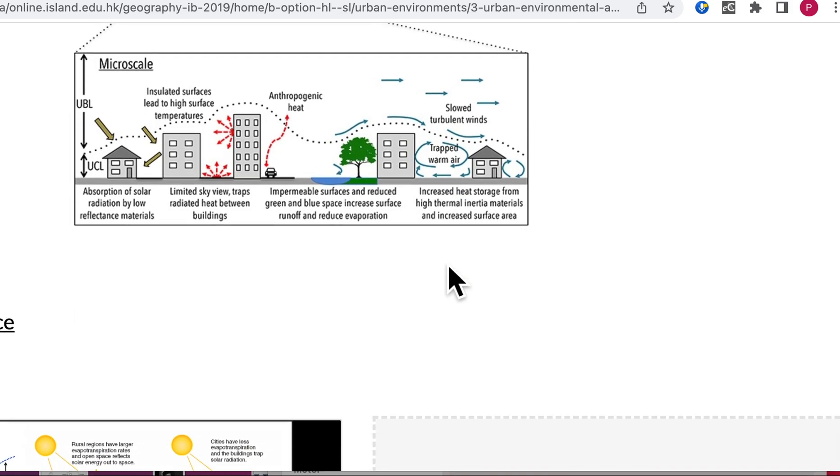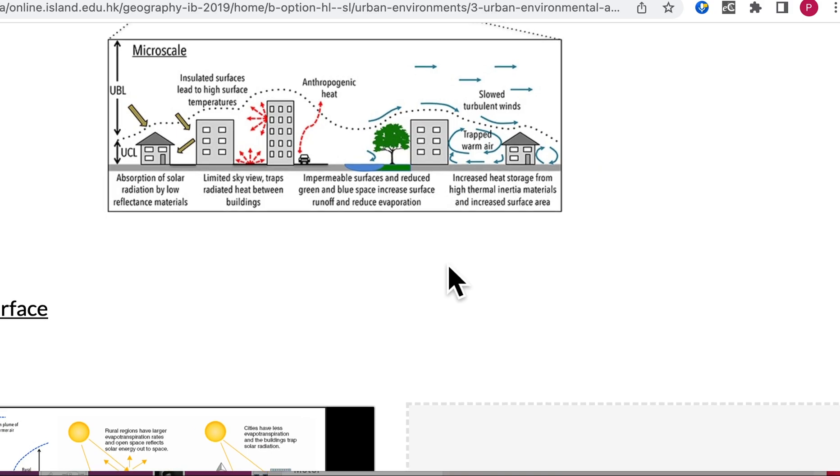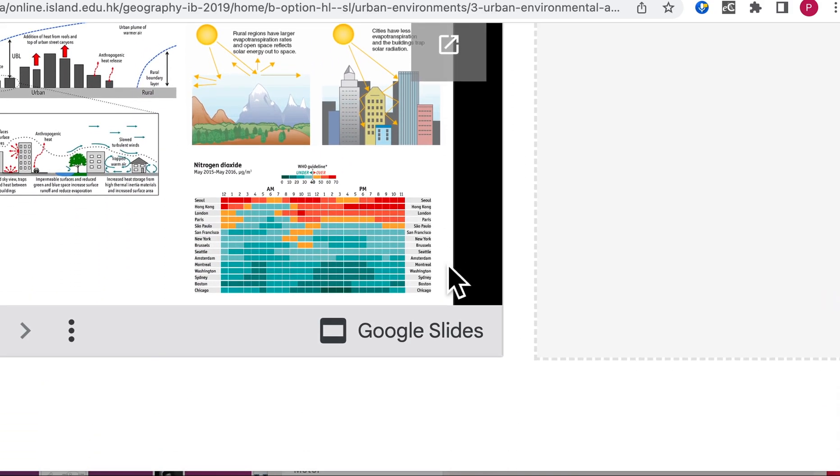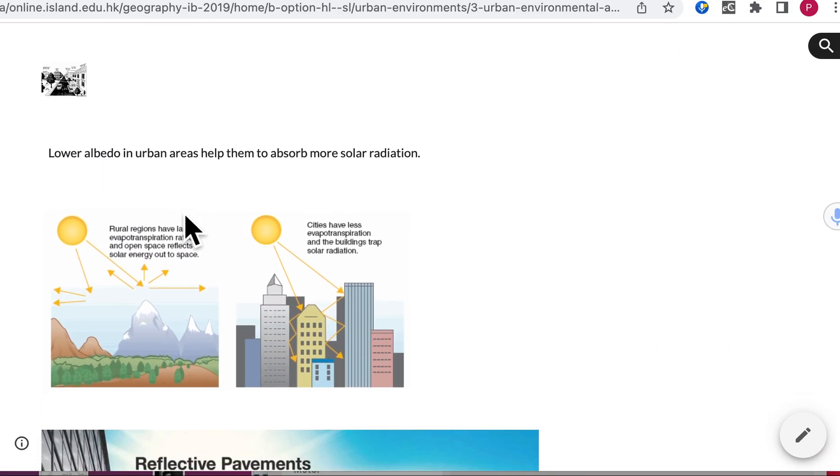So this video looked at the micro scale. In the next video, we're going to go on to specifically have a look at albedo. We're going to look at that in a little bit more detail and the concept of the structure of urban surfaces. So that's in the next video.